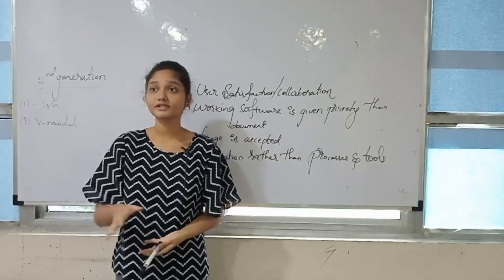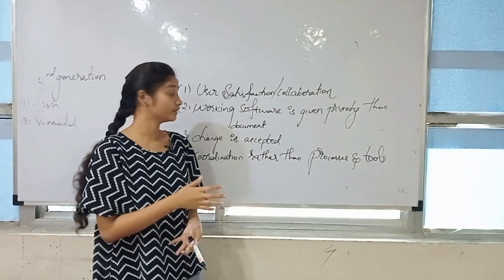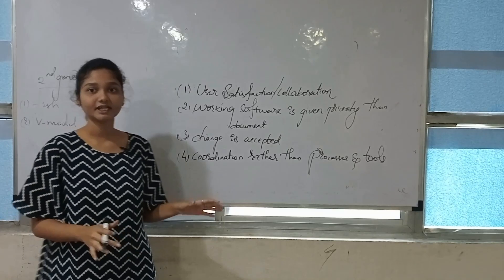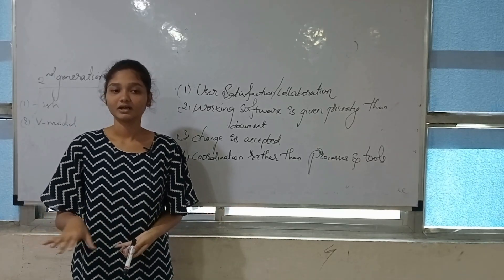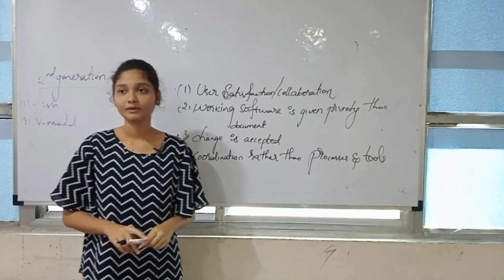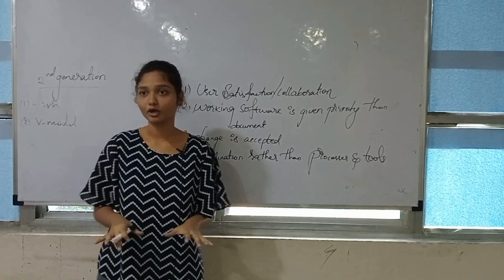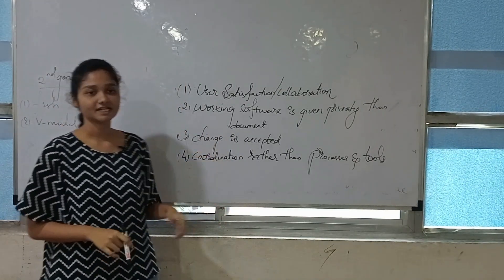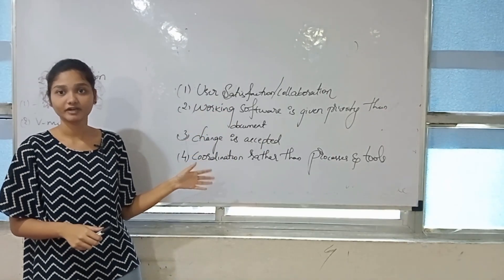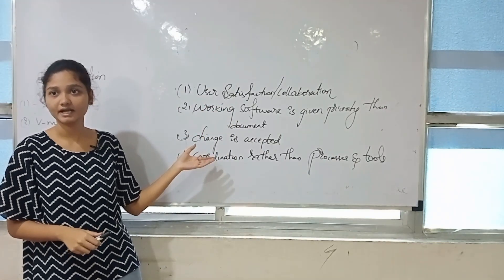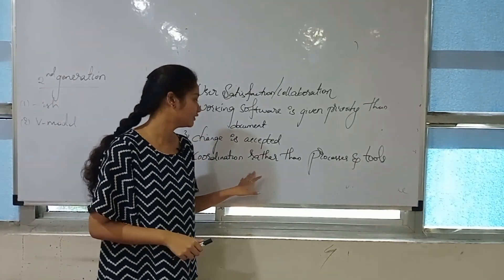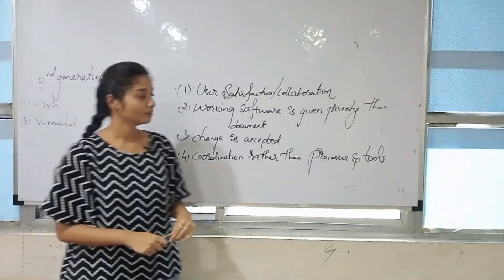The second value is that working software is given priority over documentation — that means we concentrate on working software rather than just making documents. Work has to be performed rather than being recorded into a document. The third value is that change is accepted: if the user has any changes in their requirements, we can go for a change.